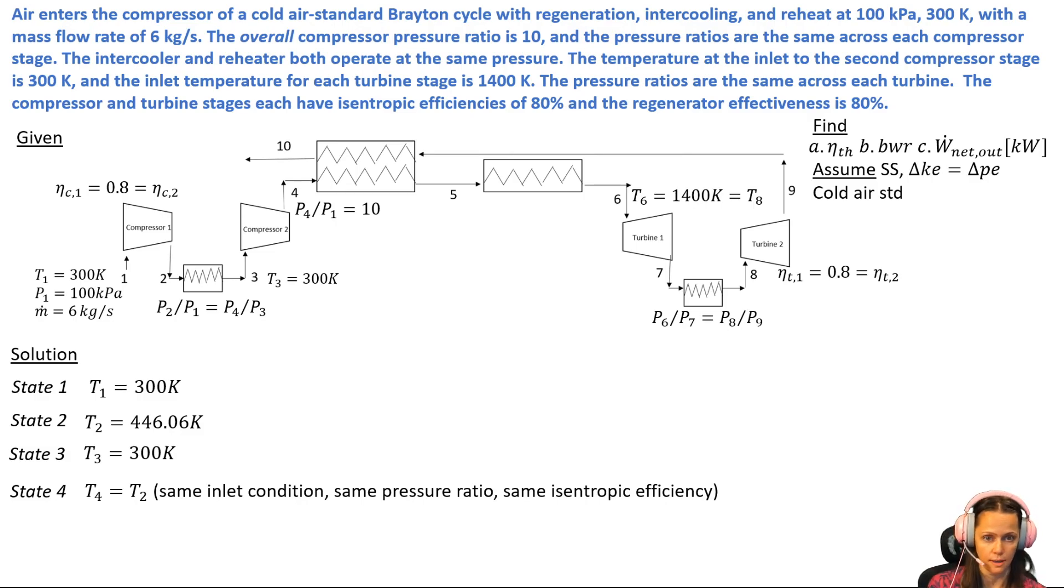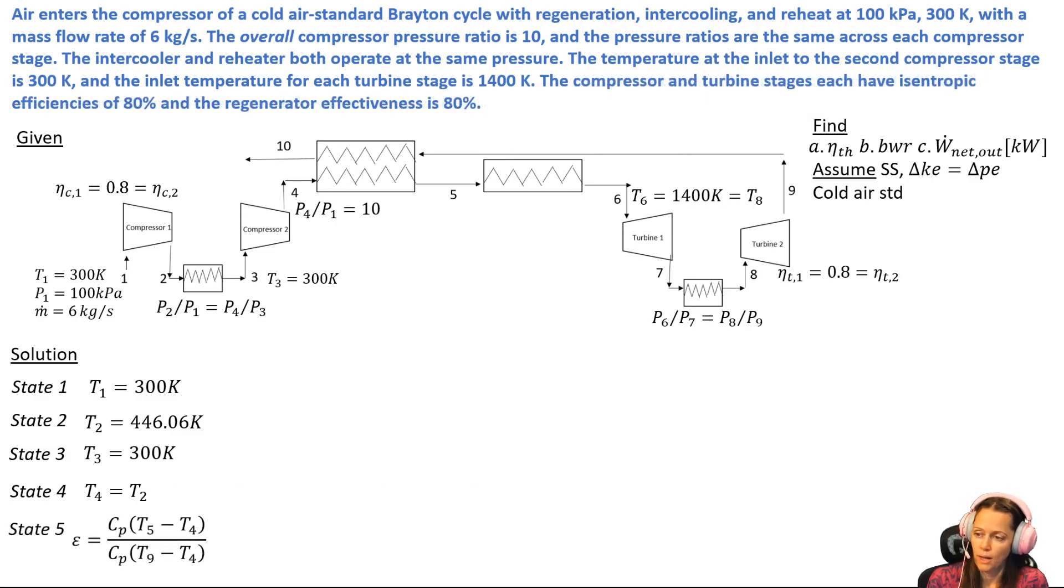Then state 5, well I've got the regenerator effect in this and that's 80 percent, that's given to me in the problem statement. I'm just going to define it in terms of Q regen and Q regen max. So Q regen is on the top, that is CP times T5 minus T4, that's the actual amount of heat transfer that occurs by regeneration.